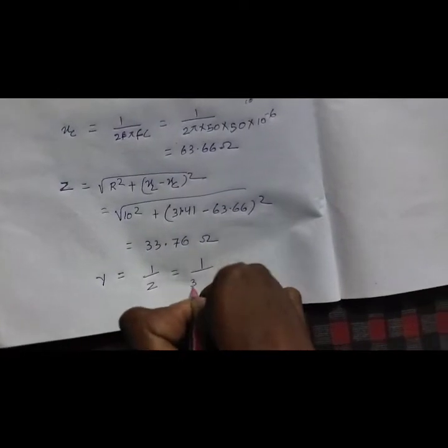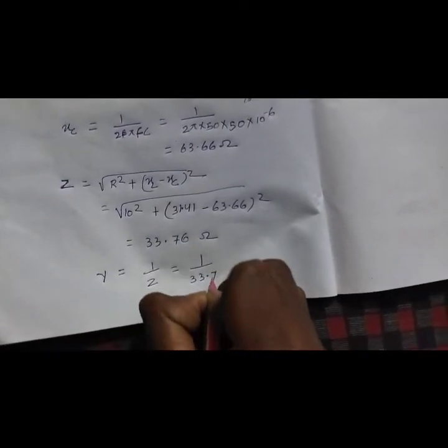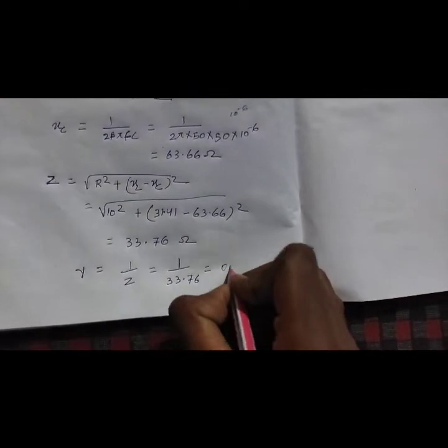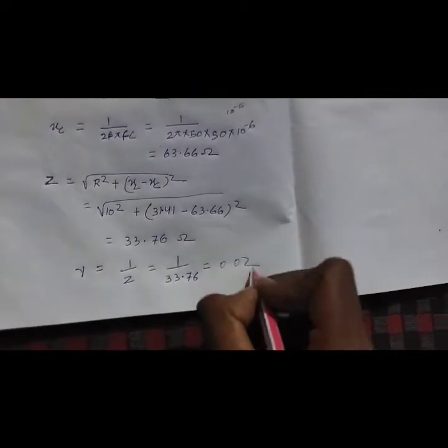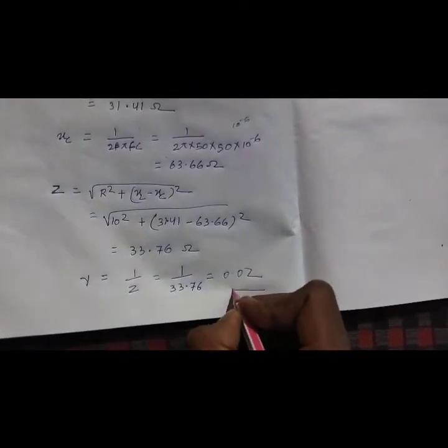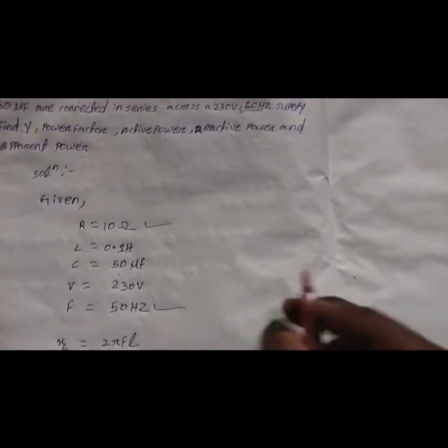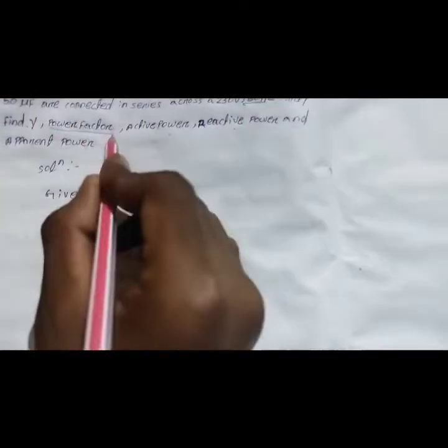Then find admittance Y. We know Y = 1/Z, so equal to 1 upon 33.76, which equals 0.02 siemens.